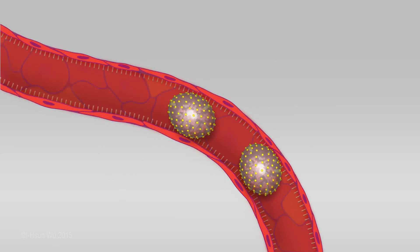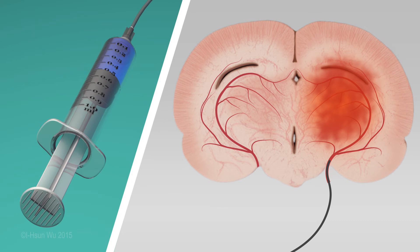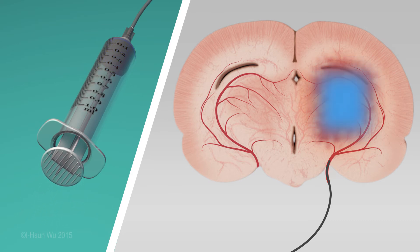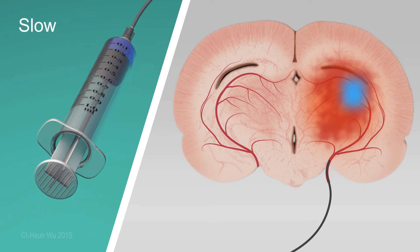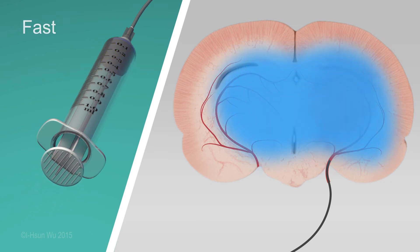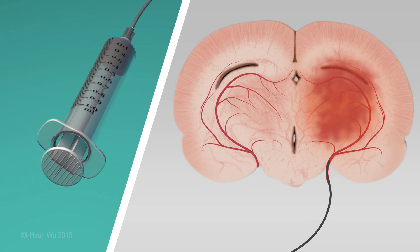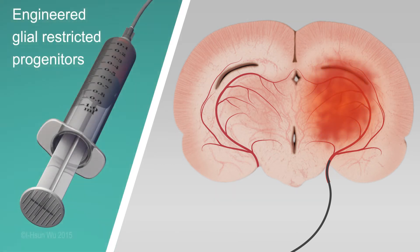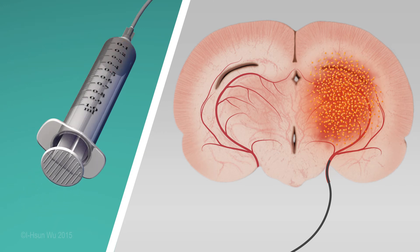An intra-arterial microcatheter is introduced into the internal carotid artery, and contrast-enhanced MRI is used to optimize the area of cell distribution. The contrast makes the distribution area visible under MRI. The size of the cell distribution area is matched to the size of the damaged area by adjusting the infusion speed. Once the best injection condition has been determined, the engineered glial-restricted progenitors are loaded into the syringe, connected to the microcatheter, and infused to achieve the best engraftment result.